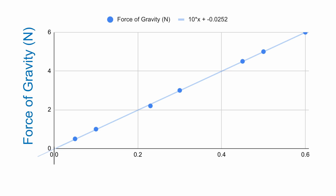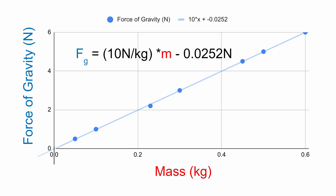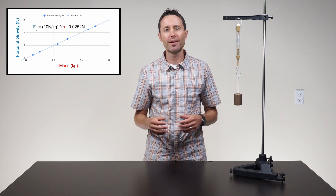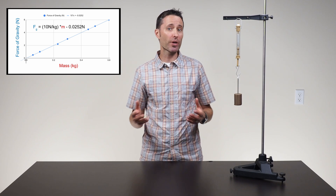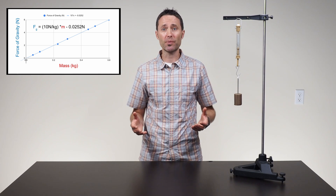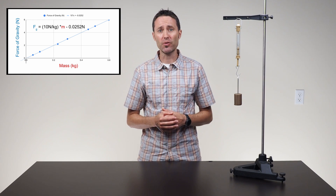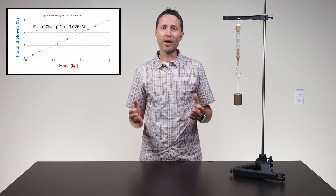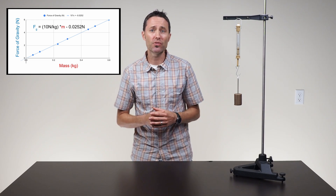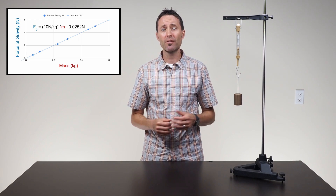To analyze the collected mass and gravitational force data, have students graph their data by placing the gravitational force values on the y-axis and the mass values on the x-axis. Show students how they can write an equation from their graph showing the algebraic relationship between the force of gravity and the mass. Any linear relationship can be written in the form y equals m times x plus b, but you want your students' equations to include the specific variables and values from the graph of their specific data.